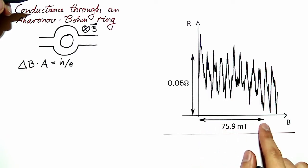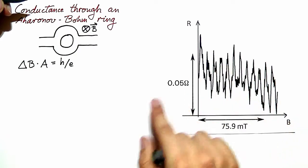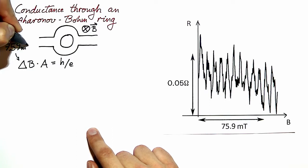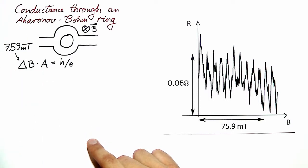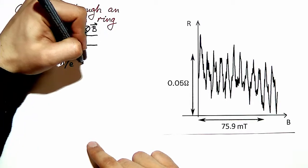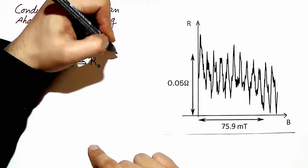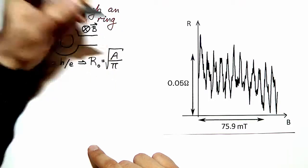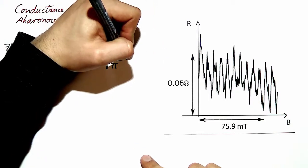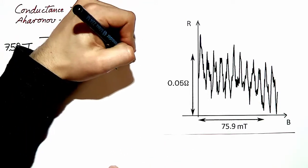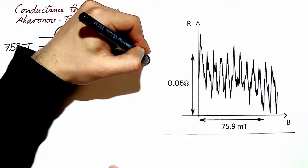This interval contains 10 maxima, delta B is 7.59 millitesla. We can solve for the area or directly for the radius, which is square root of area over π. Here we obtain, with the numbers that we have, 416 nanometers.